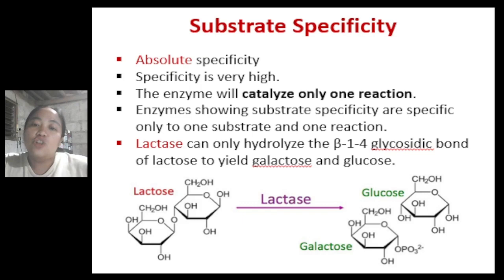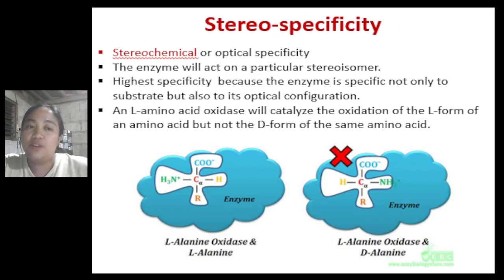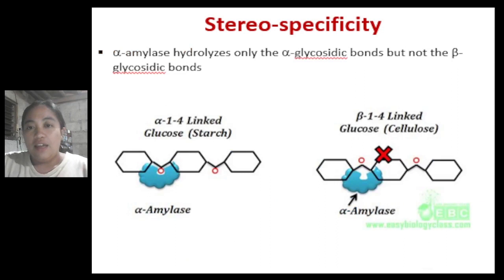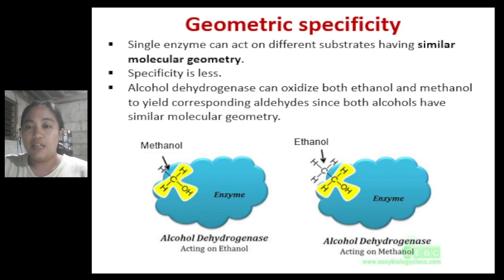Another type is stereospecificity, also called optical specificity. The enzyme will act on a particular stereoisomer. This is the highest level of enzyme specificity because the enzyme is specific not only to the substrate but also to its optical configuration. For example, L-amino acid oxidase will only catalyze the oxidation of the L-form of an amino acid but not the D-form of the same amino acid. Another example is alpha-amylase, which hydrolyzes only the alpha-glycosidic bond but not the beta-glycosidic bond.